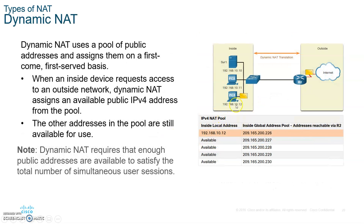Dynamic NAT is when you have a pool of addresses. It uses a pool of global IP addresses and assigns them on a first-come, first-served basis. So if you've purchased 10 or 20 global IP addresses, when a packet comes in I'll translate it and let it go out, and another request grabs the next one from the pool. If you exhaust all the IP addresses in the pool, then no one from the inside will be able to go out on the internet.